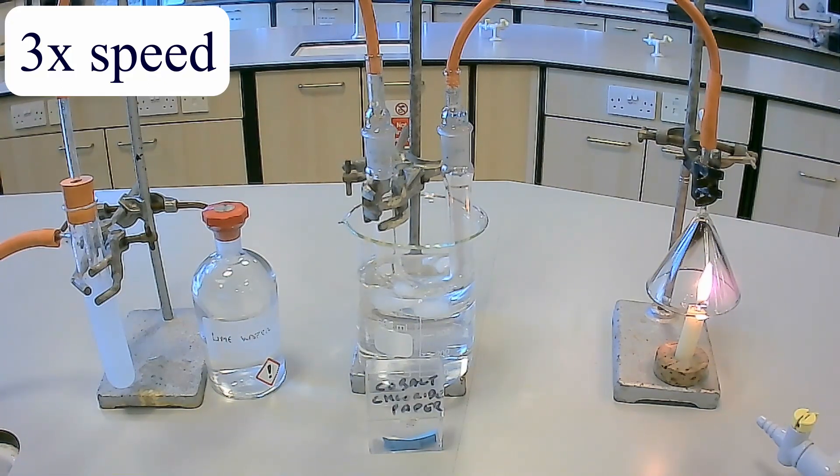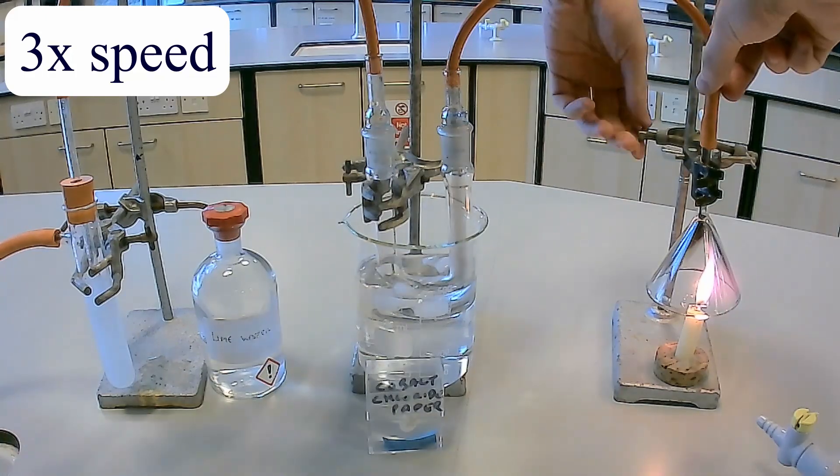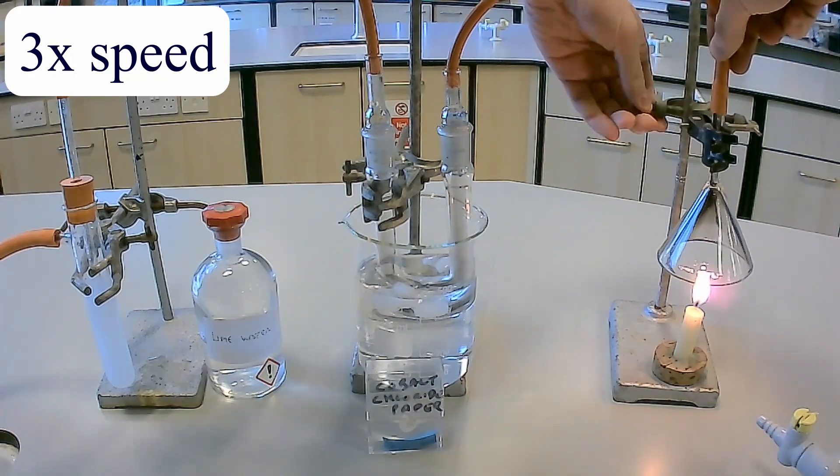Any water vapor in the tube will condense and turn into liquid water, which is then tested for by the cobalt chloride paper. The paper changing color from blue to pink indicates the presence of water.